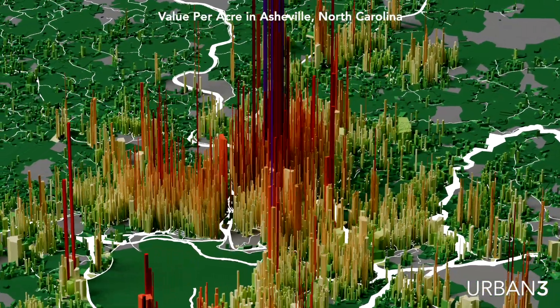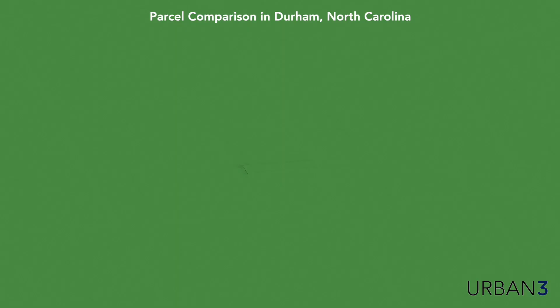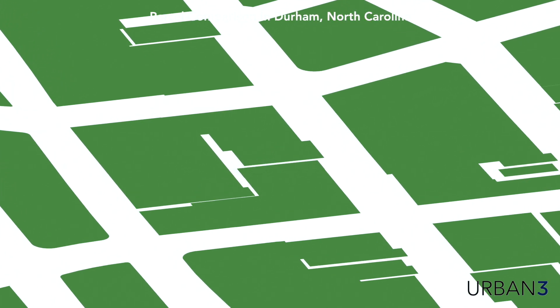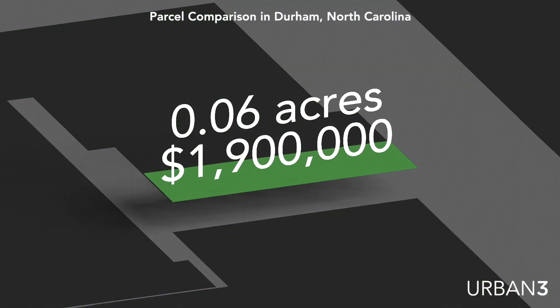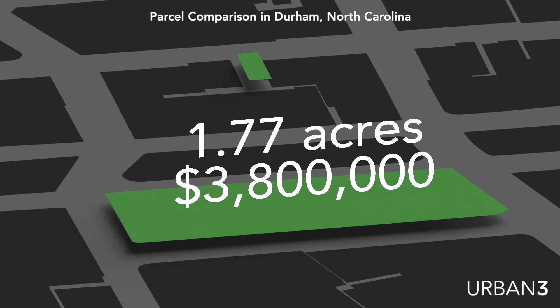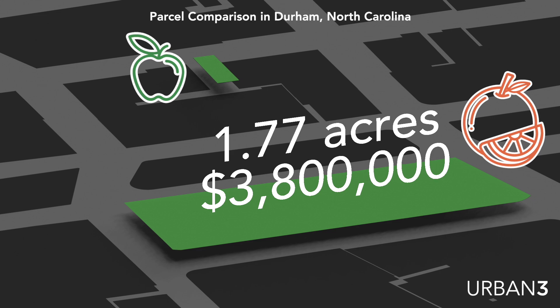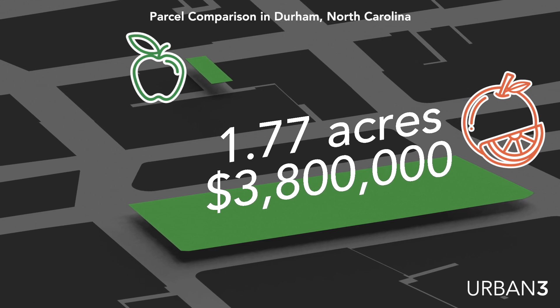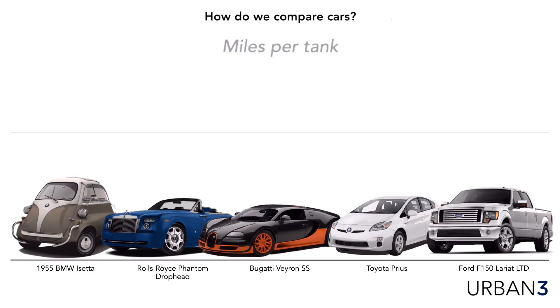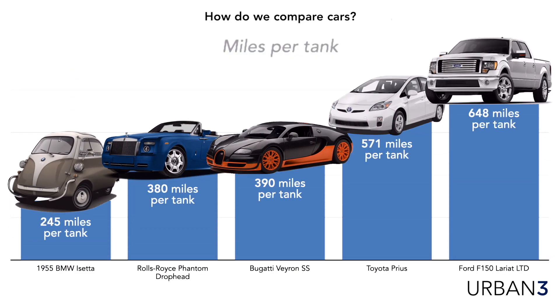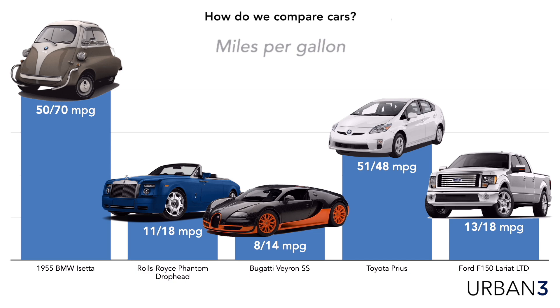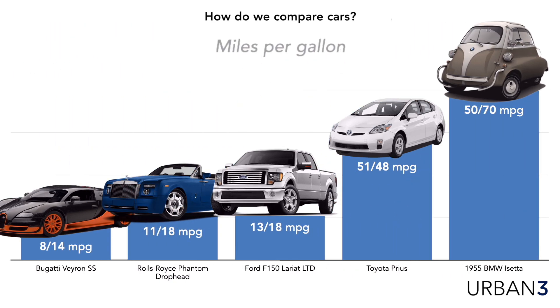The best way to measure that value is on a per-acre basis. All of the land across the country is divided into parcels, and those parcels vary in size — smaller parcels tend to have less value, larger parcels tend to have more. Comparing parcels without accounting for land size is like saying 'miles per tank' for a car. We don't say that because we understand all tanks are different sizes. To measure efficiency, we say miles per gallon — we should do the same with real estate.